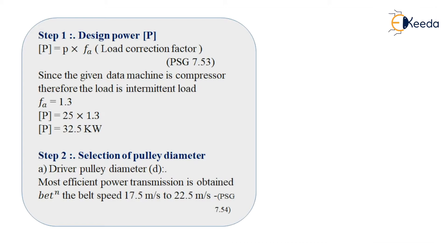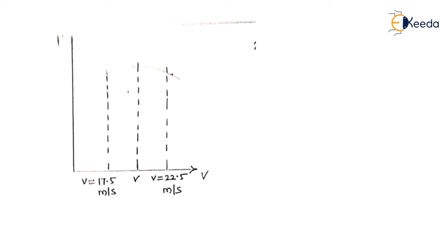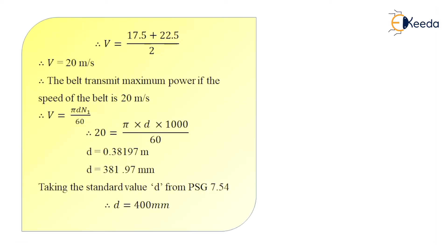Step number 2: Selection of pulley diameters. First let's find out driver pulley diameter, that is small d. Most efficient power transmission is obtained between the belt speed of 17.5 meter per second to 22.5 meter per second, as given on PSG 7.54. So this you can see from the graph of power versus V. So taking an average of 17.5 and 22.5, I get the value of V as 20 meter per second. The belt transmits maximum power if the speed of the belt is 20 meter per second.